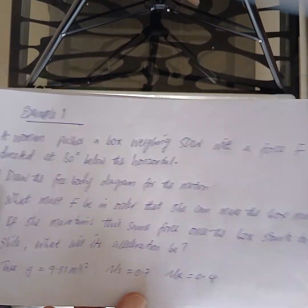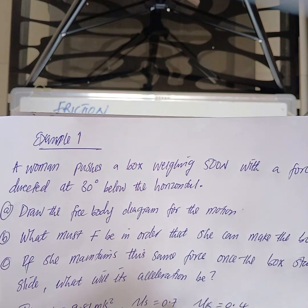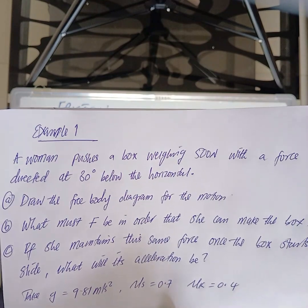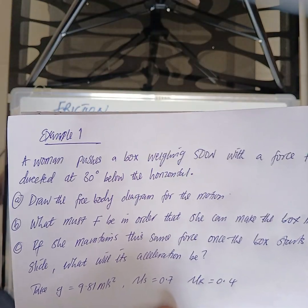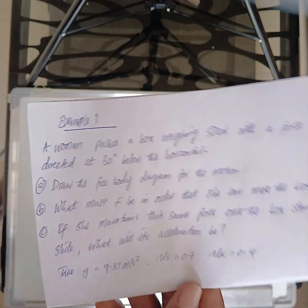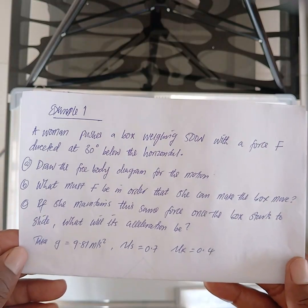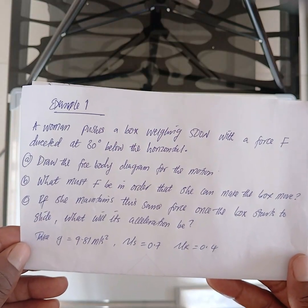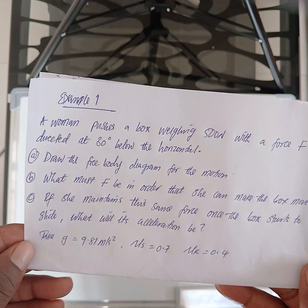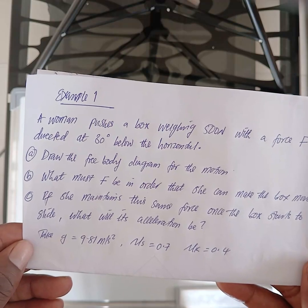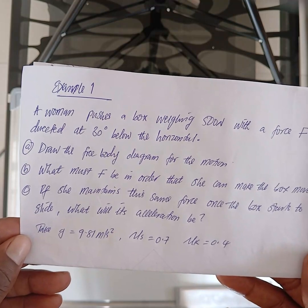Hello, welcome guys to this lecture. We want to solve an example to cement what we discussed on friction. The question: a woman pushes a box weighing 500 newtons with a force F directed at 30 degrees below the horizontal. Part A: draw the free body diagram for the motion. Part B: what must F be in order that she can make the box move?